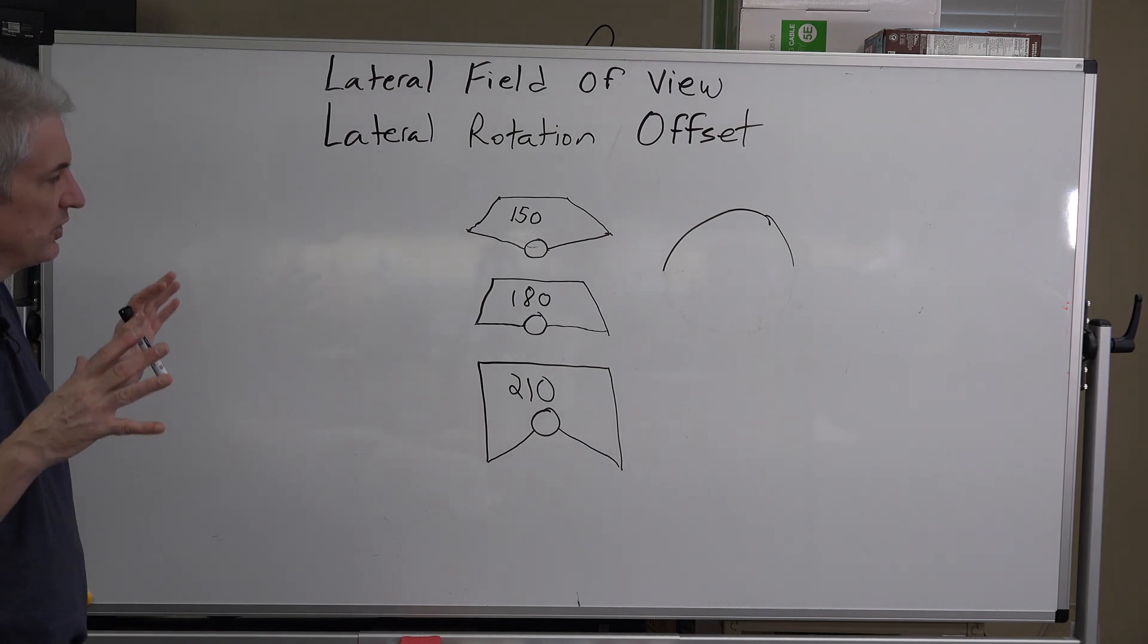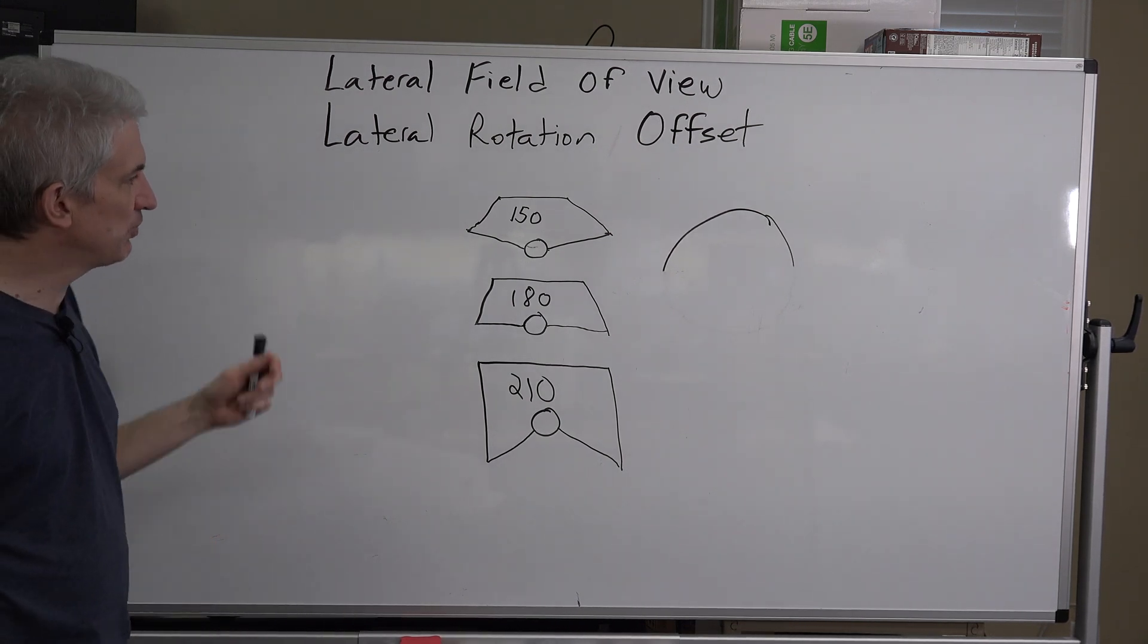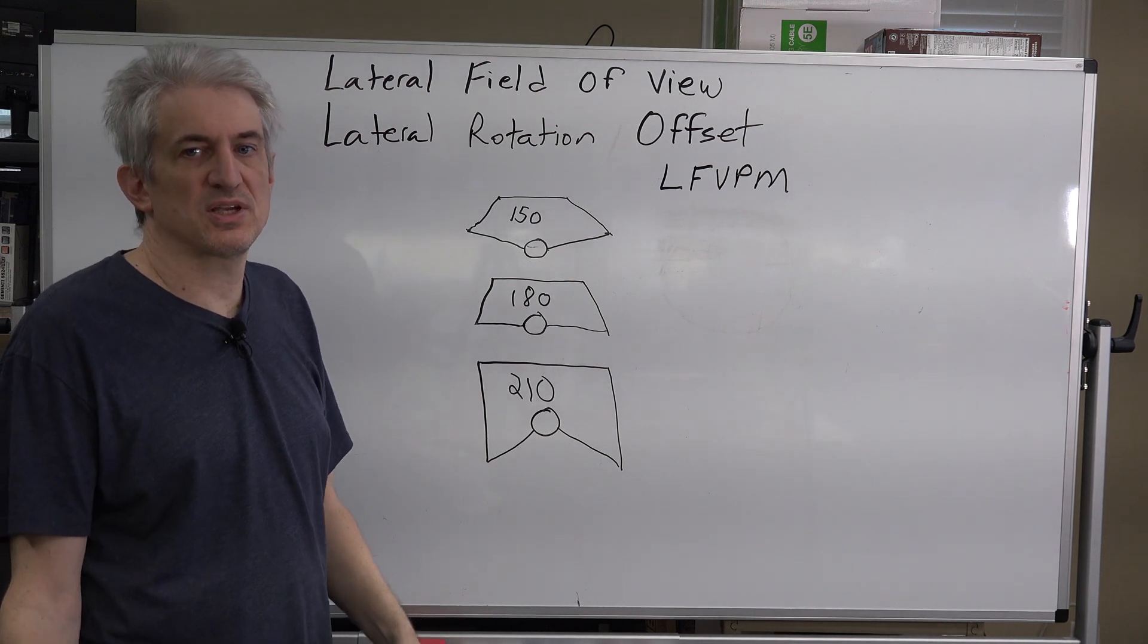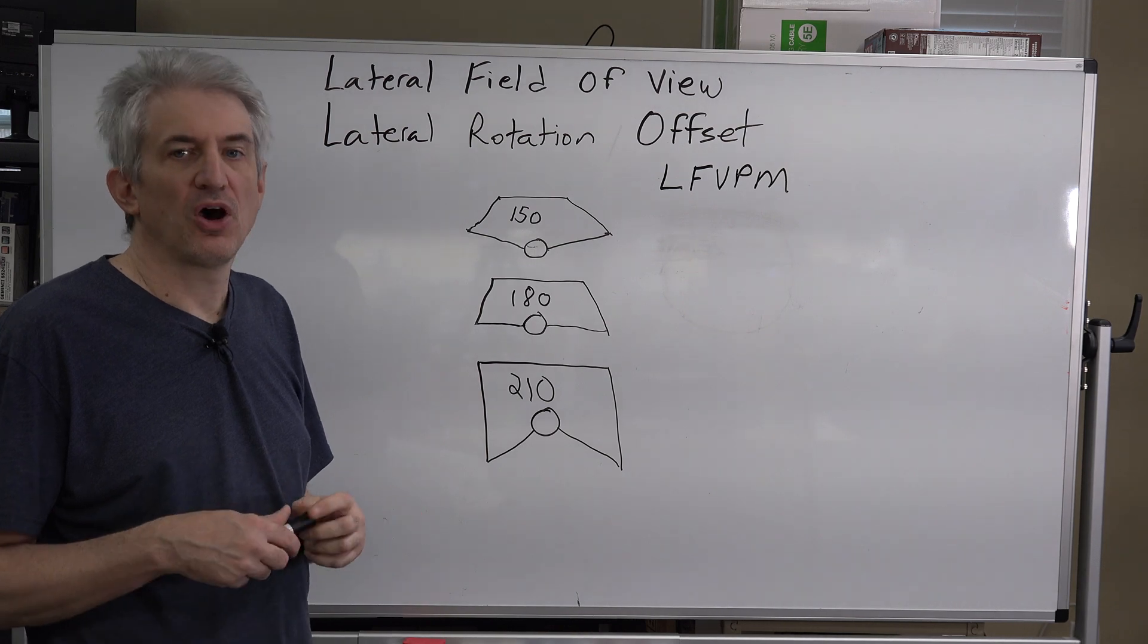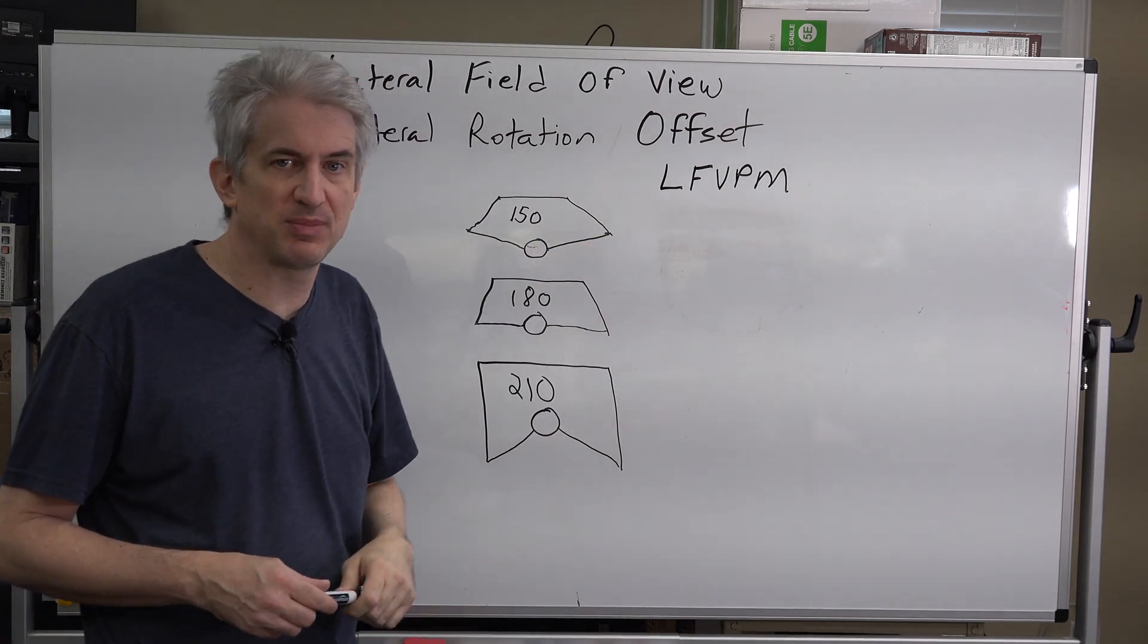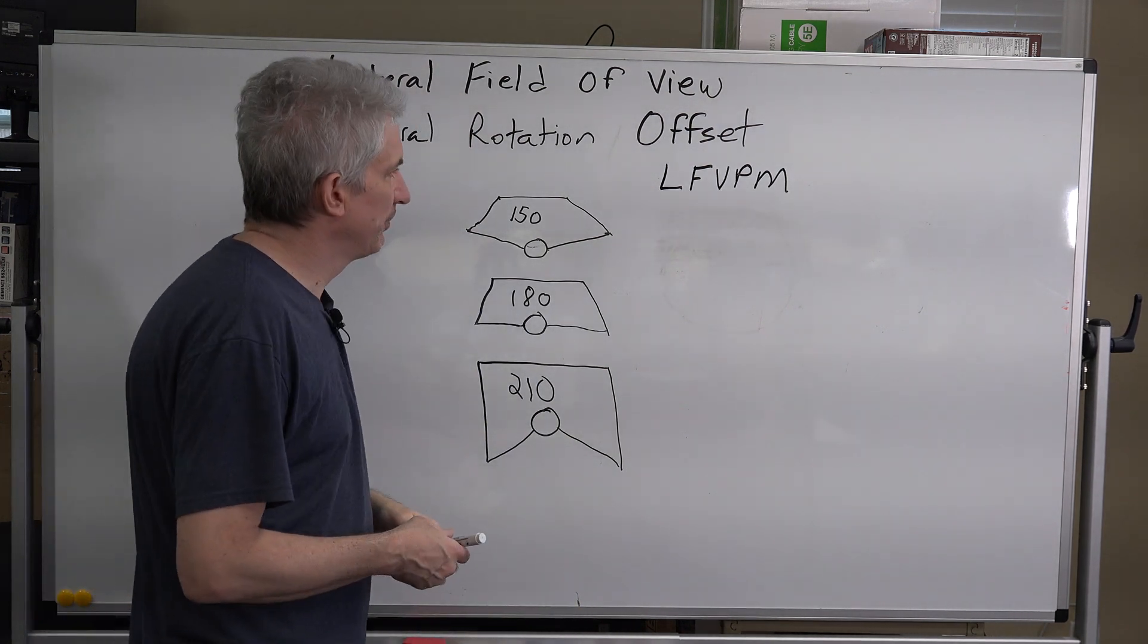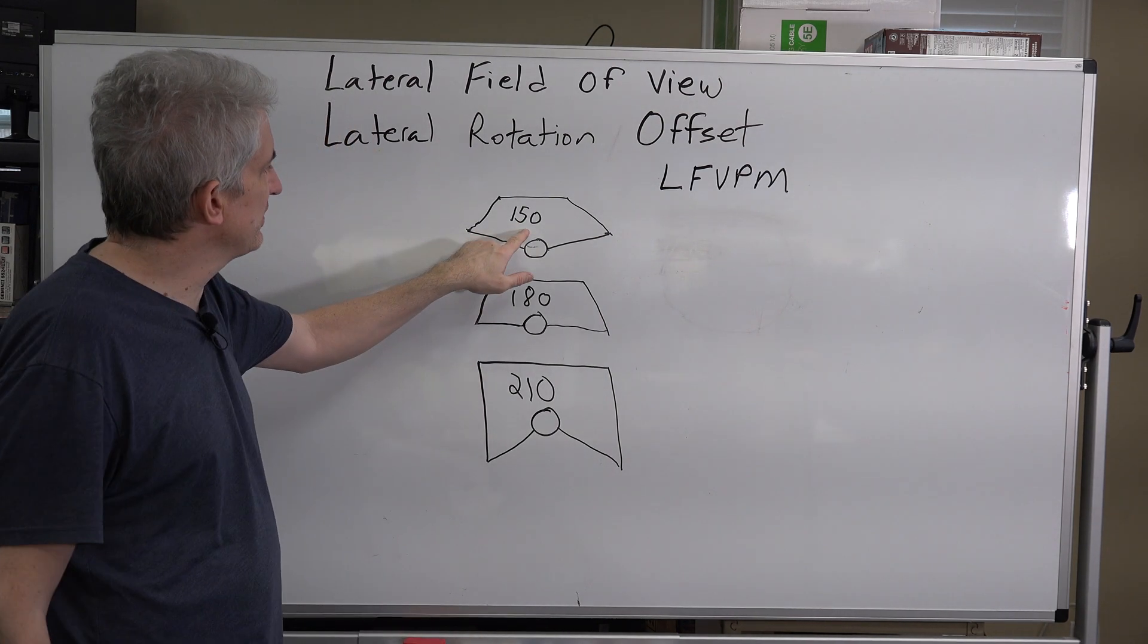When you're setting up your lateral field of view and your lateral rotation offset, it's important to know the total field of view that you are getting in these situations. So the next thing we need to determine, we've got our total lateral field of view. Now we need to determine our lateral field of view per monitor. If all your monitors are the same size, which they should be, otherwise you get into some weird stuff, all you do is divide this number by three.